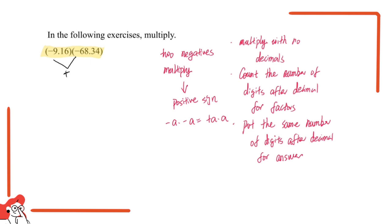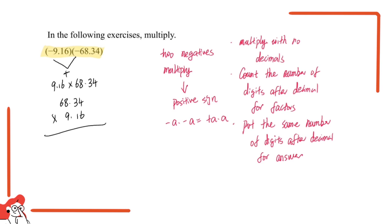Now let's get back to the question. We know the two negative signs cancel out, so what's left is 9.16 times 68.34. Let's do the multiplication. First, we multiply with no decimals, so we multiply 6834 times 916.